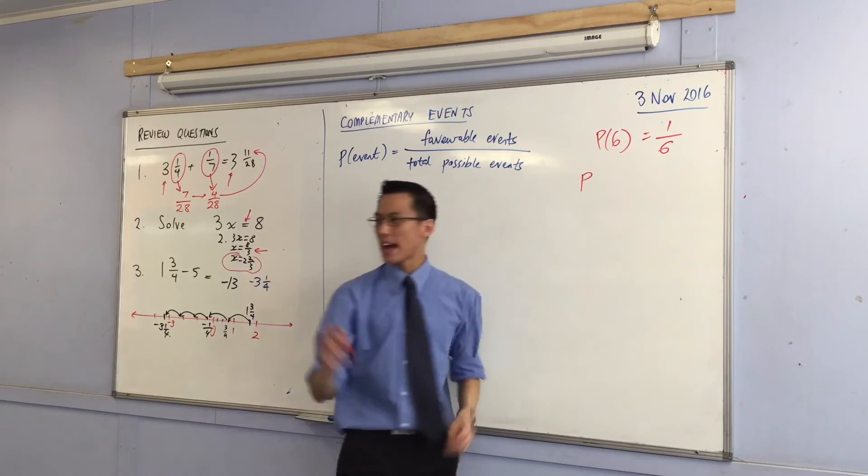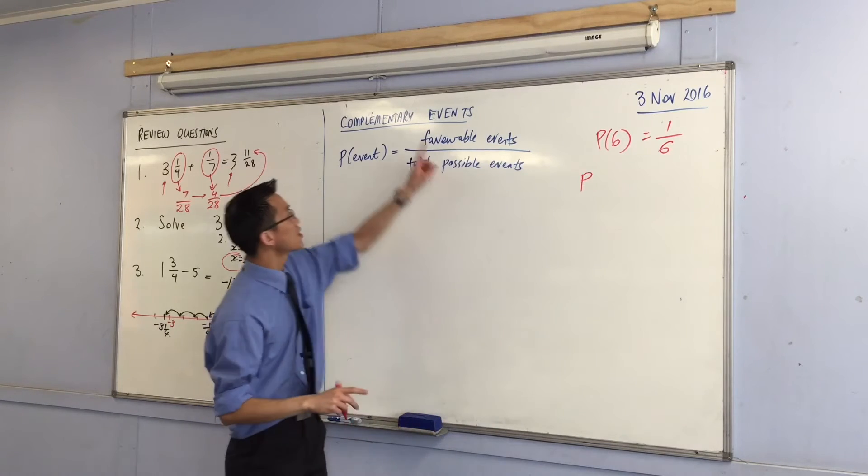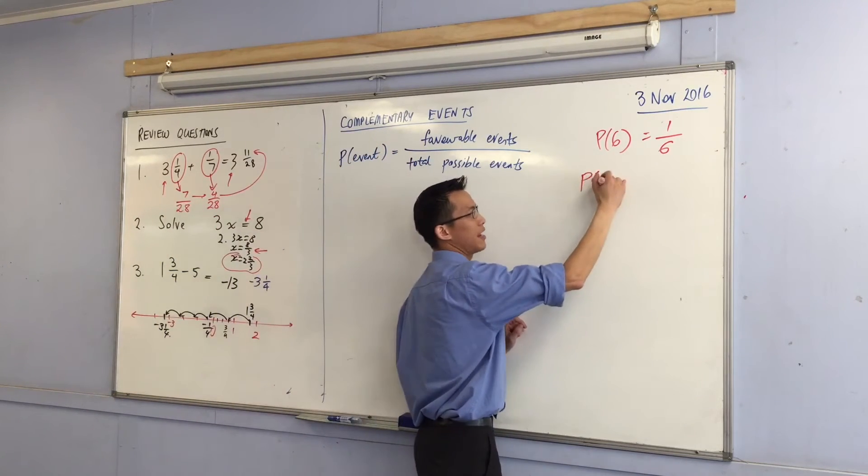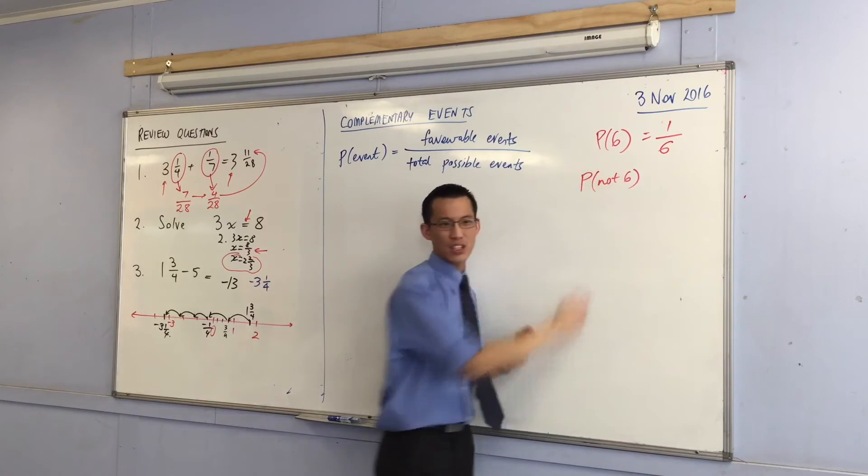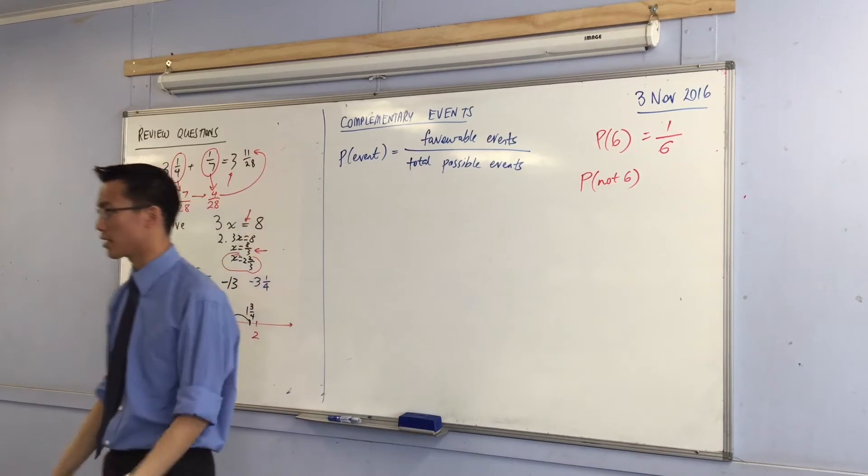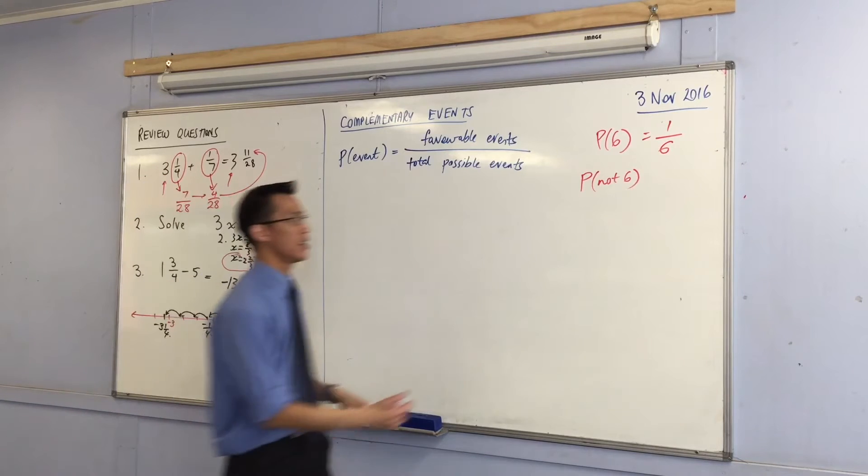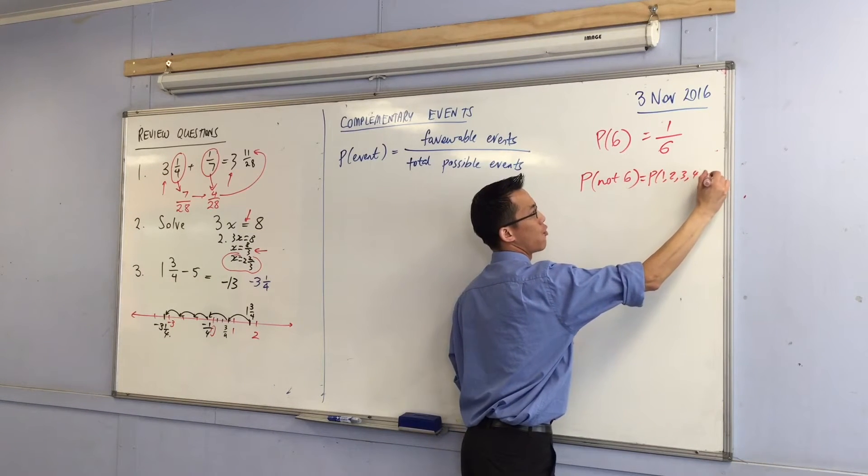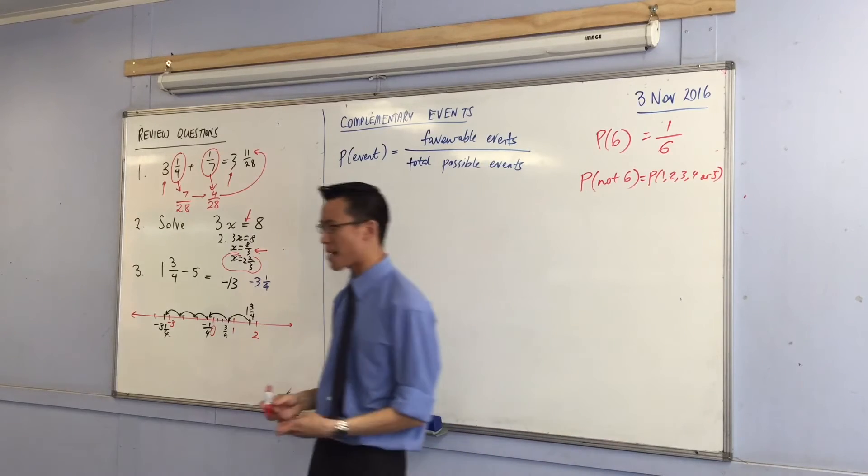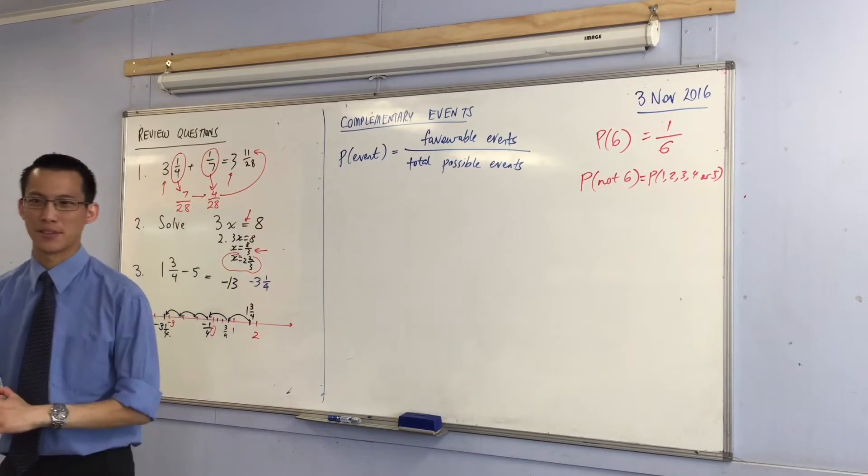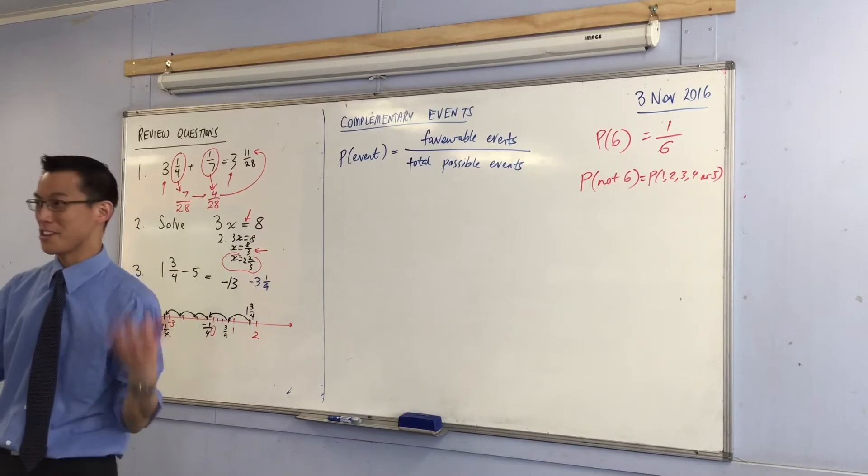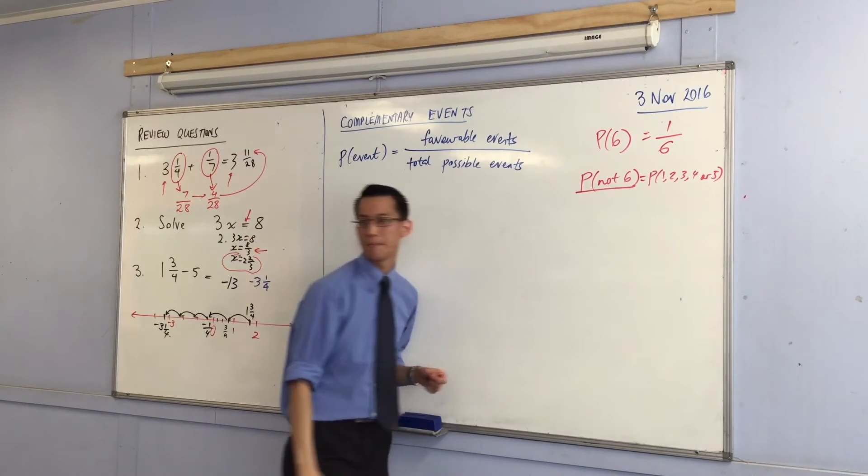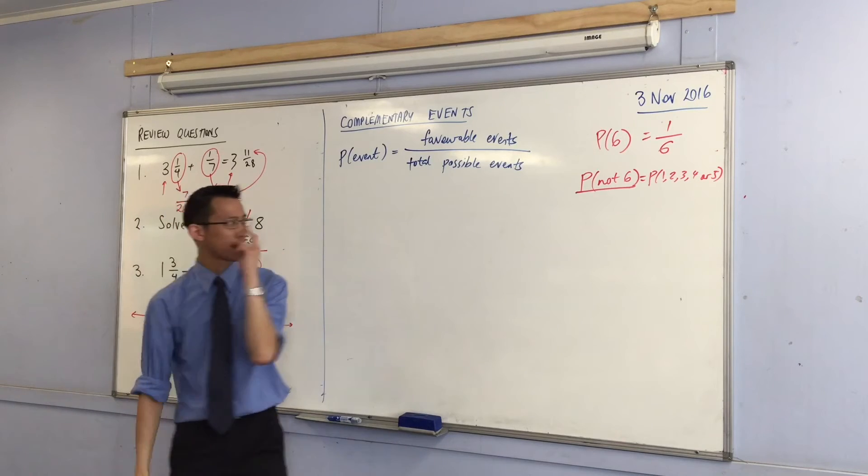You can write that in two ways. The first way, pause on this complementary event idea. I can just say not six. I can say not six. Now, that's not the only way I can write it. I can write it as the probability of one, two, three, four, or five. But do you see why I prefer the first way? What's better about the first way? It's just quicker. You guys know, mathematicians, famously lazy, will always take the quickest path we can.